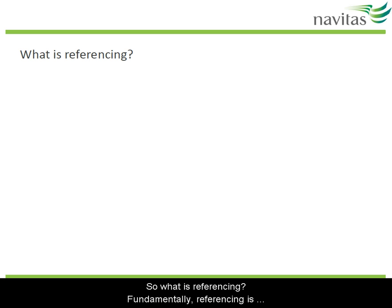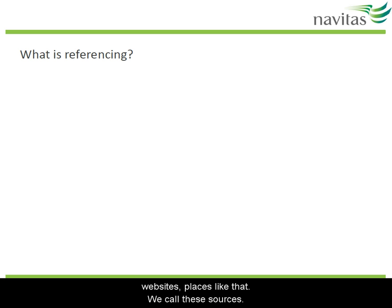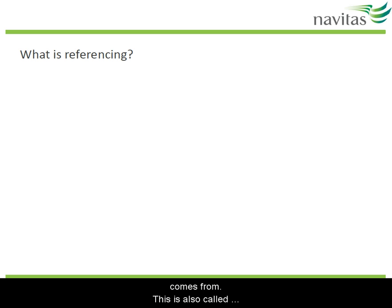So what is referencing? Fundamentally, referencing is saying where you got your information from. You've learnt the information you're going to use in your assignments from books, articles, websites, places like that. We call these sources. Referencing is saying which sources the information comes from. This is also called acknowledging your sources.